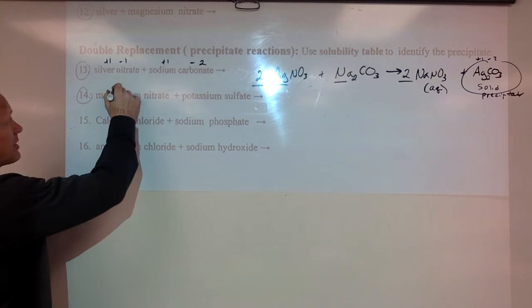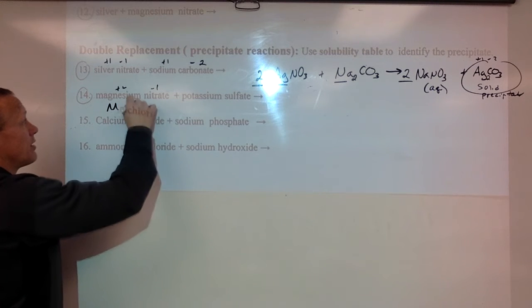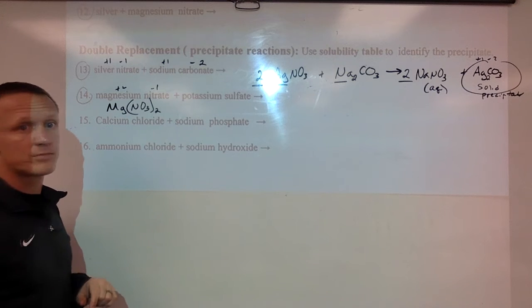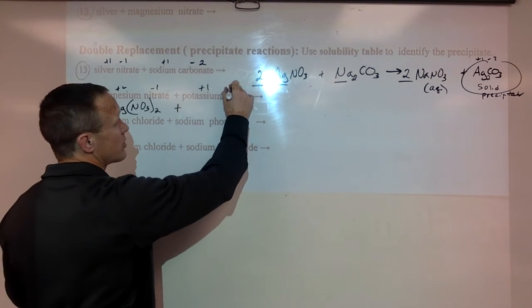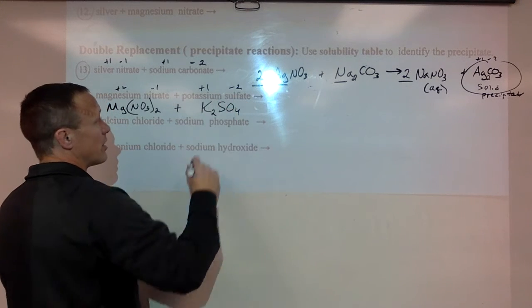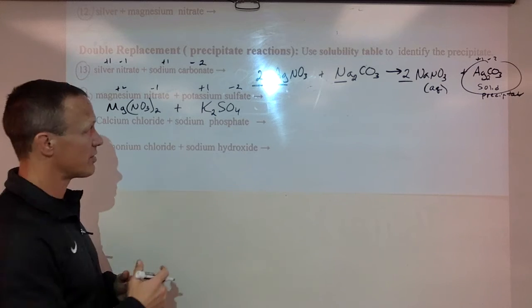Next one we have magnesium nitrate. Magnesium is a plus two. Nitrate is a minus one. So you're going to have Mg(NO3)2. Plus potassium is a plus one. Sulfate is a minus two. So we have two there. Again both of these things would be aqueous. They'd be dissolved in water. That's how double replacements happen.